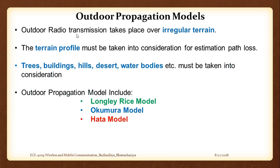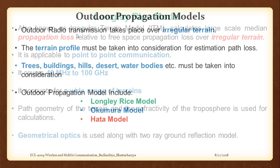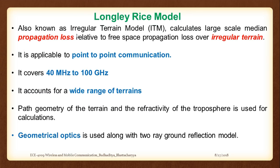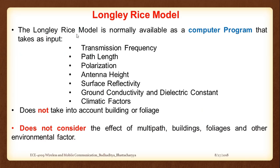The Longley-Rice model is one of the very early path loss models, developed before Okumura and Hata. As a prelude, what the Longley-Rice model gave us is: for an irregular terrain, you fit in input variables like antenna height, receiver height, polarization, transmission frequency, and path length into a program, and the model predicts the nature of loss that is happening.